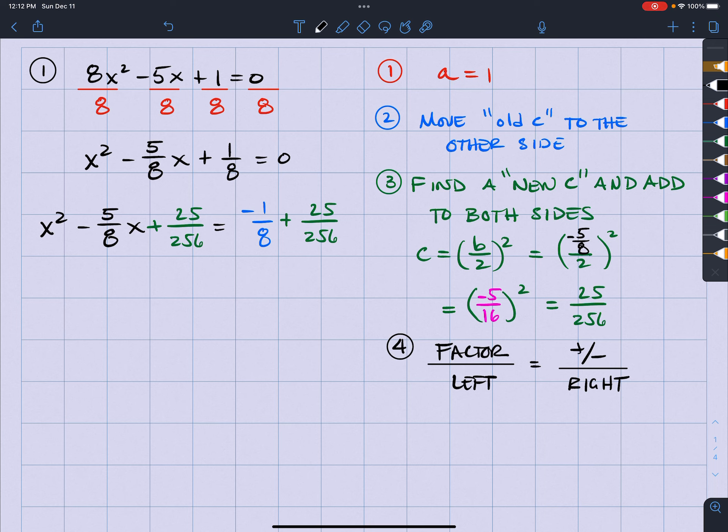So the left side, the factoring is easy. It's going to be X blank something squared, and that is going to come right from here. And since it's negative, it means we're going to be subtracting. So that part is done.